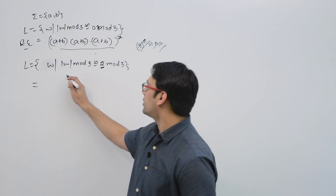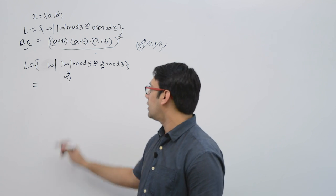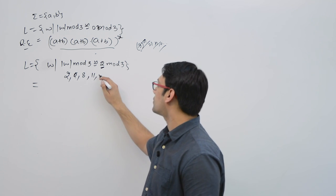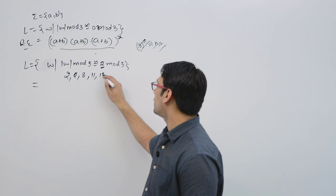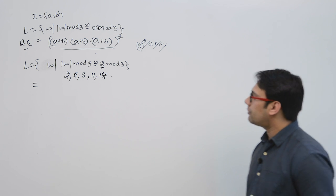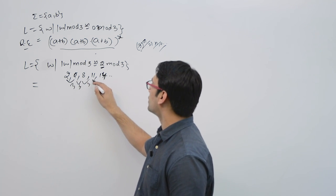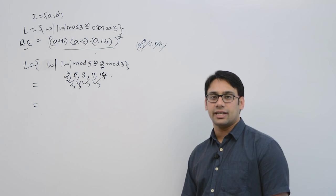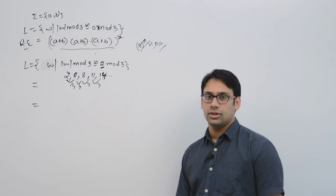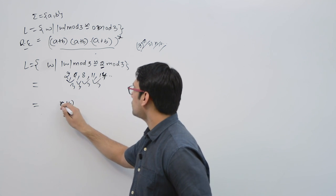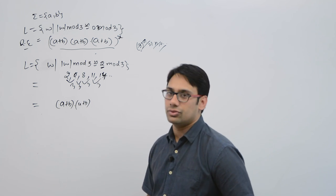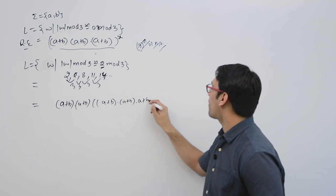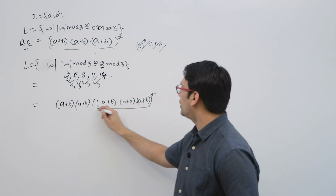So the possible string lengths are 2, 5, 8, 11, 14, and so on — there is a gap of 3 between each. This means we can concatenate a length-2 string with a multiple of 3. The regular expression is (a+b)(a+b) concatenated with ((a+b)(a+b)(a+b))*, where the star applies only to the length-3 block.